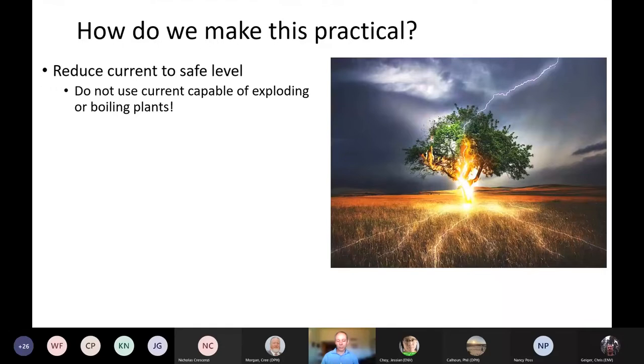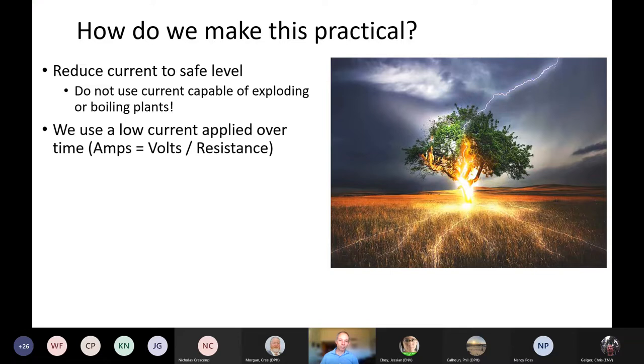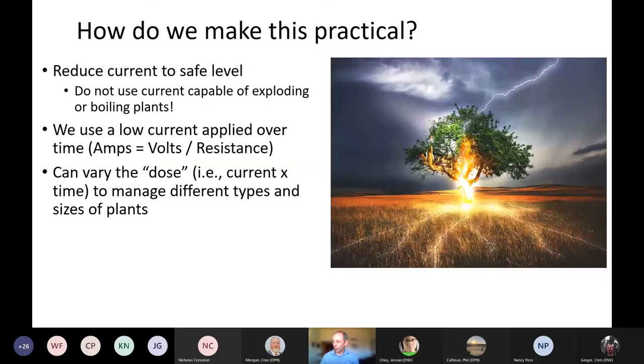So the way we're considering this is reducing the current to a safe level. So we don't want to boil plants or explode plants. We want to use electricity to treat them in a more controlled way. So in the system I'm going to be describing, we're using a very low current in the low milliamp range, so two to 10 milliamps, but delivered over a long time to affect the plants. Sorry, I'm having to advance by rolling the little thing on my mouse, and it's kind of sensitive. So we can vary the dose that an individual plant gets by keeping the current constant, but varying the time that the plant's exposed to the electricity. So that's how we might kill a tree over a long period of time, rather than with a very high dose over a short period of time.